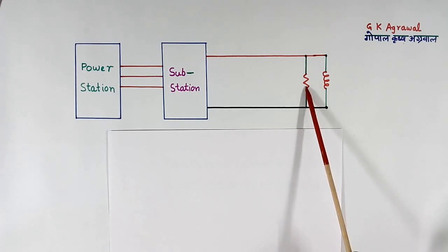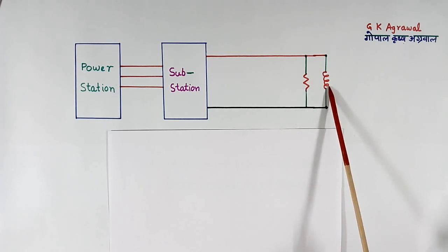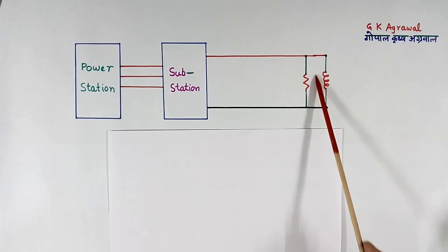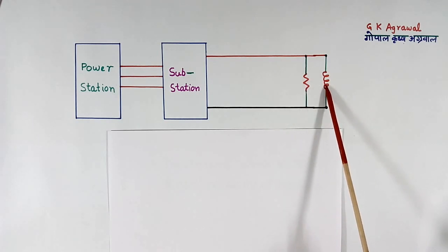Here this is resistive load. This is inductive load. Because of this inductive load, reactive power will flow here, and which is responsible for reducing the power factor.